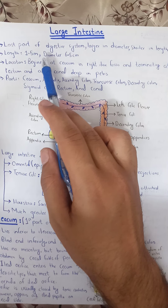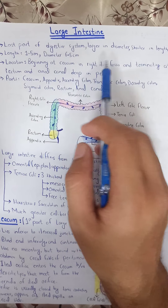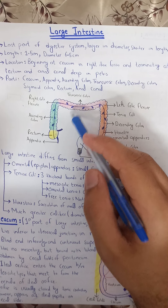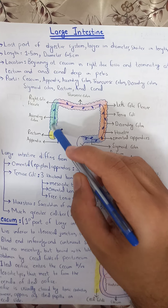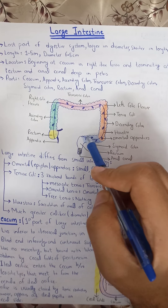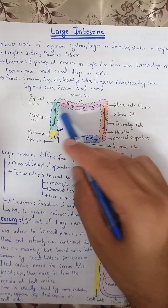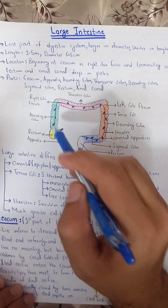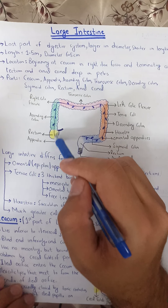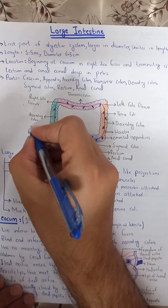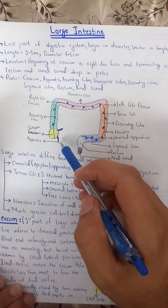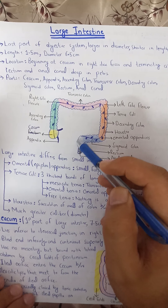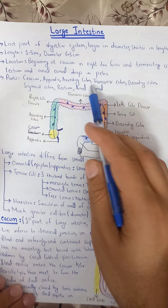The large intestine begins at the cecum in the right iliac fossa and terminates at the rectum and anal canal deep in the pelvis. Starting with the cecum, then ascending colon, transverse colon, descending colon, sigmoid colon, rectum, and then the anus. The appendix is attached to the cecum. These are all parts of the large intestine.